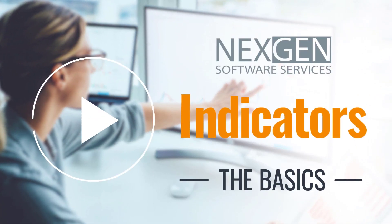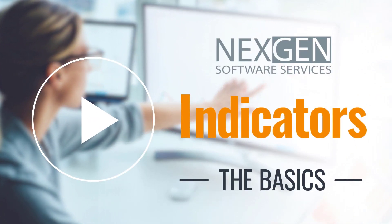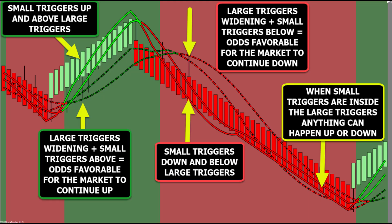While studying next-gen software services indicators, you will spend a lot of time analyzing the T3 trigger lines. The number one rule for reading small versus large trigger lines on a larger chart is to focus on the location of the trigger lines relative to one another. You will also spend time analyzing the width as well as the direction of the trigger lines to determine trend direction and the overall strength of the market.